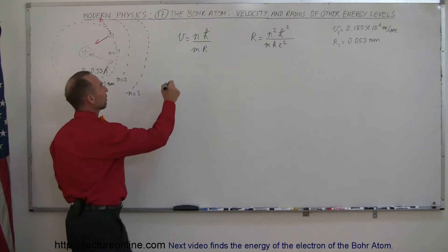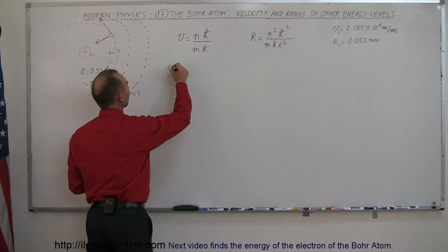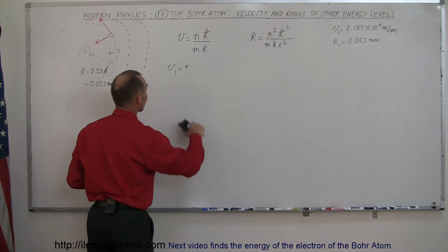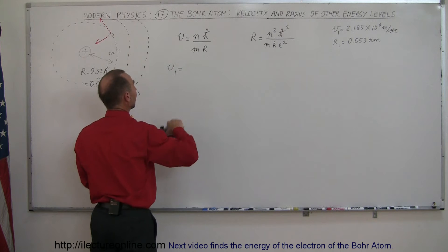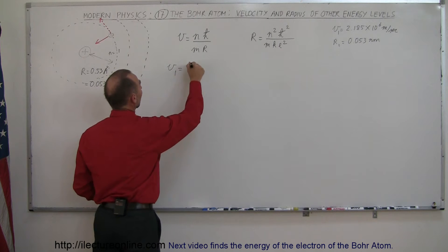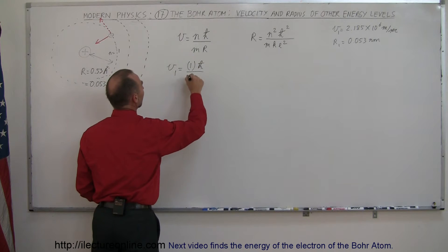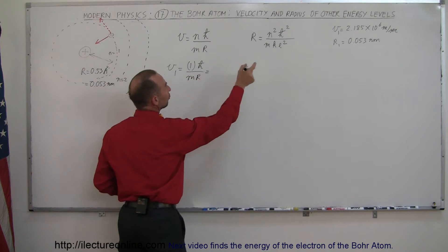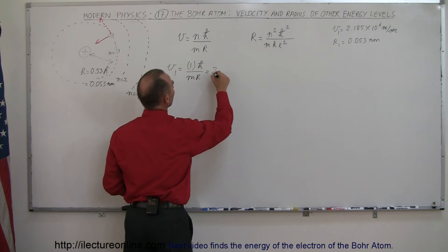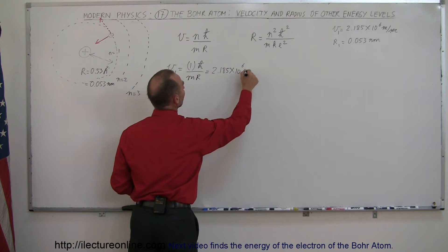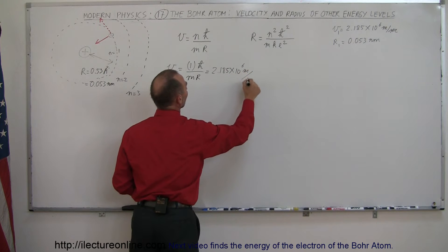Let's find the equation for V1. V1 is equal to 1 times ℏ over MR, and we know that this is equal to 2.185 times 10 to the 6th meters per second.